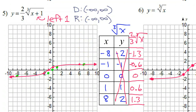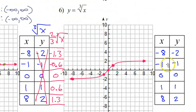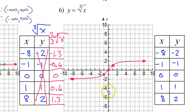We already did number 6 — it was just the parent function, so it should be self-explanatory. See you in the next video for more example problems.